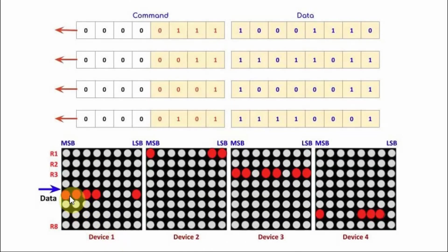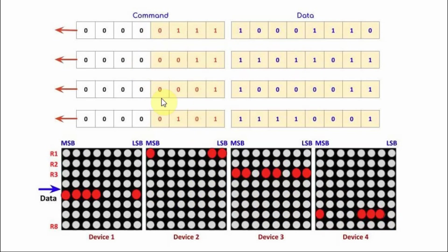As an example, let's say we want to program the devices with four specific byte values. To program device 4, we first send a 16-bit value. For device 3, we send the next 16-bit value. For device 2, we send the corresponding value. And finally for device 1, we send the last value.